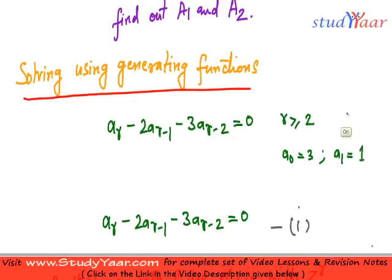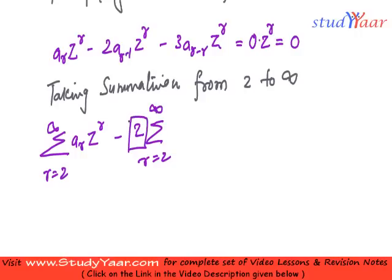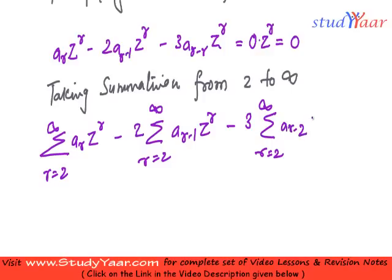If your R is from 3, you are going to take sum from 3 to infinity. So what I get is sum from R equals 2 to infinity of A_R Z^R, minus 2 times sum from R equals 2 to infinity - look, 2 is a term which is not related to R, therefore I have kept it outside - of A_{R-1} Z^R, minus 3 times sum from R equals 2 to infinity of A_{R-2} Z^R.